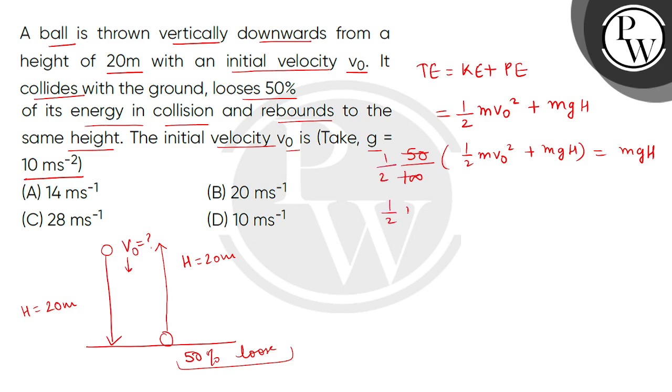So 2MGH minus MGH gives us MGH on the right-hand side, and left-hand side is half MV0 square. Now, if M cancels, then we will get V0 equals square root of 2GH.